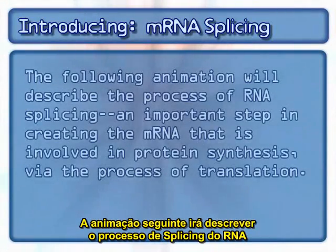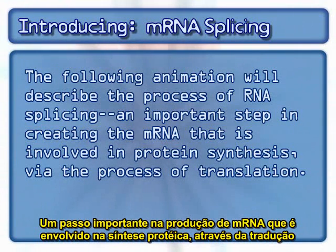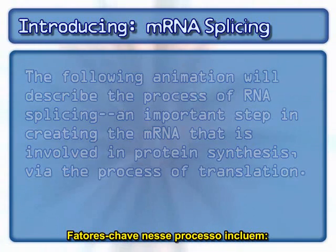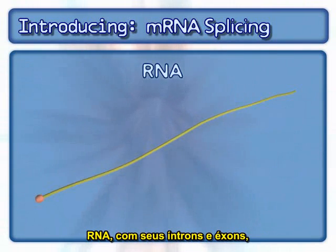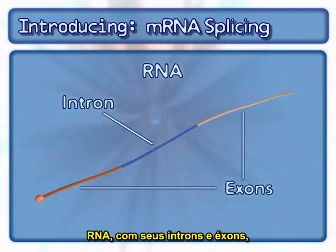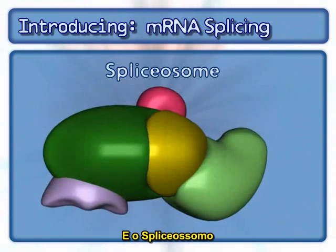The following animation will describe the process of RNA splicing, an important step in creating the mRNA that is involved in protein synthesis via the process of translation. Key factors in this process include RNA possessing introns and exons, and the spliceosome.